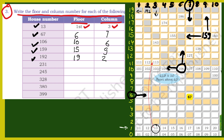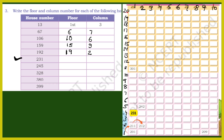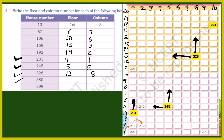बाकी के देख लेते हैं. 231 — यह 4th row है और 1st column, पहली लाइन में आया है. फिर 245 — 5th floor and 5th column. फिर 328 — 13th row and 8th column. फिर 380 — 18th row and 10th column. फिर 399 — 20th row and 9th column. हमें rows left side देखने हैं और column उपर की तरफ देखना है. I hope आपको यह समझ में आया होगा.